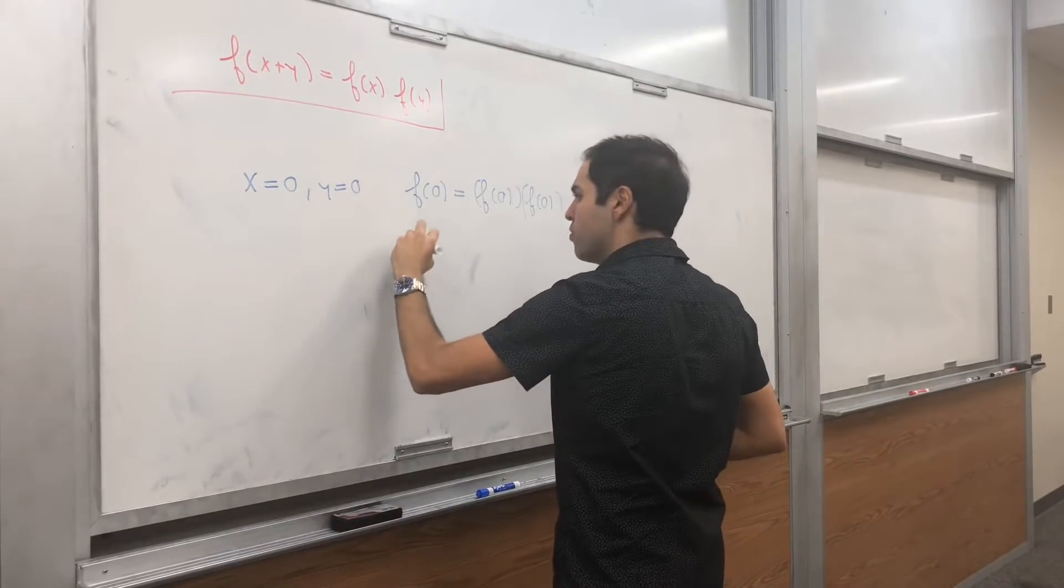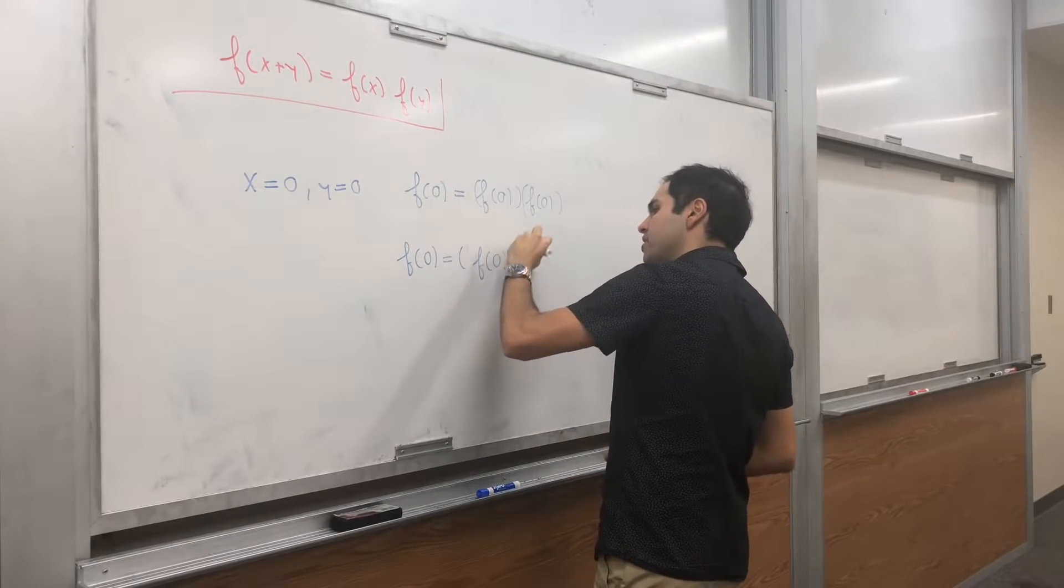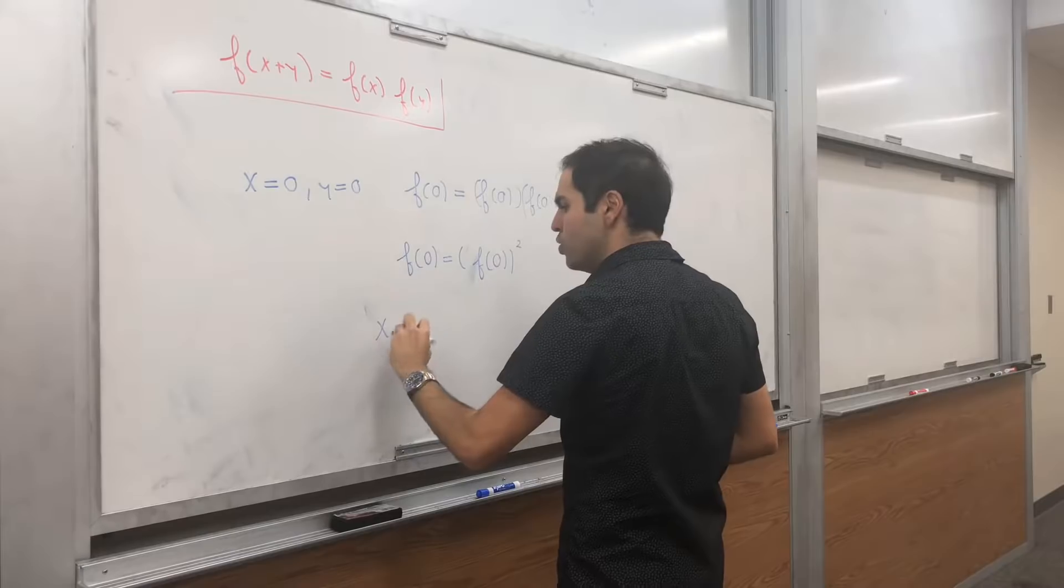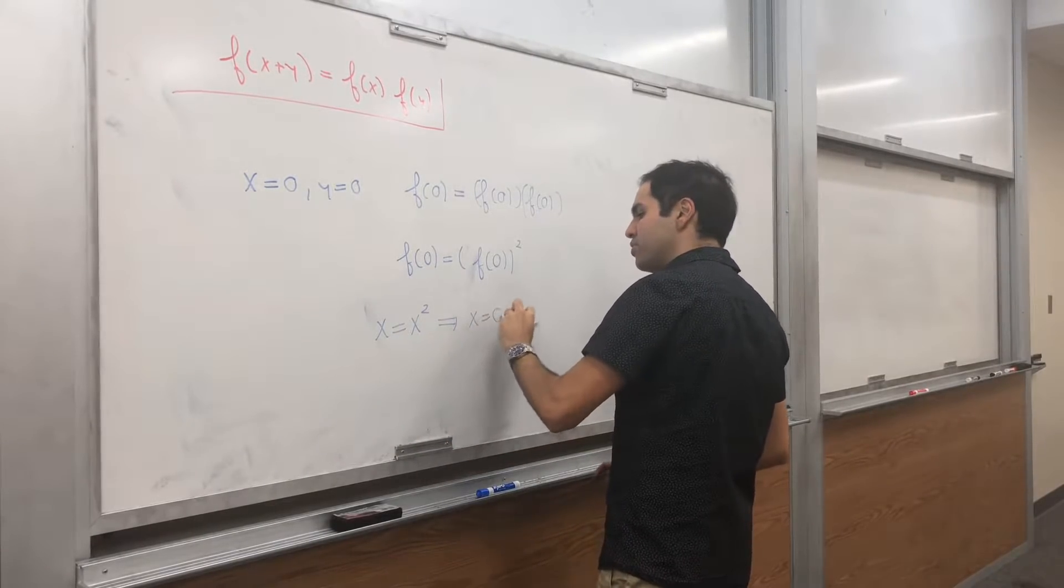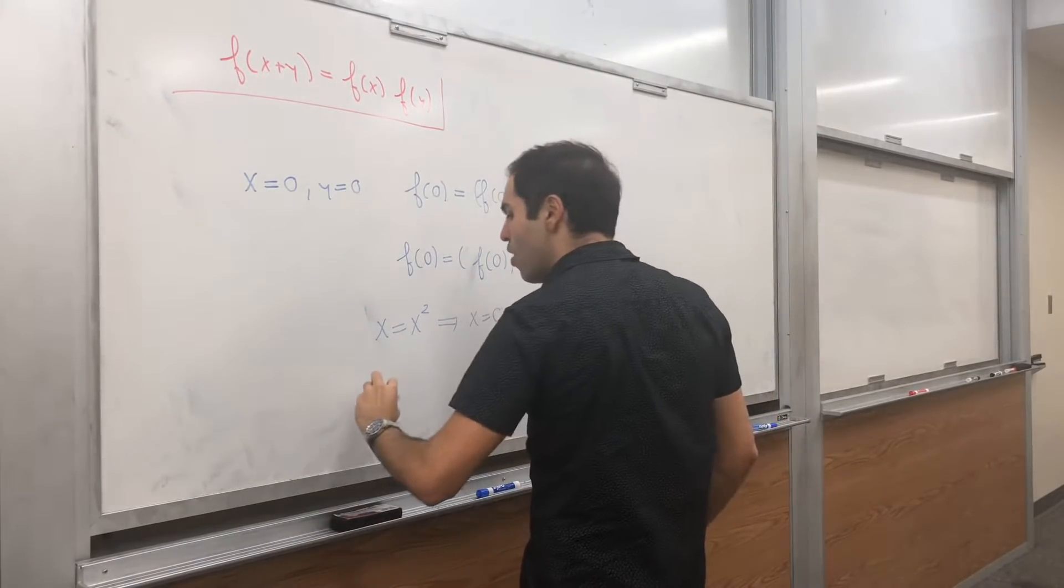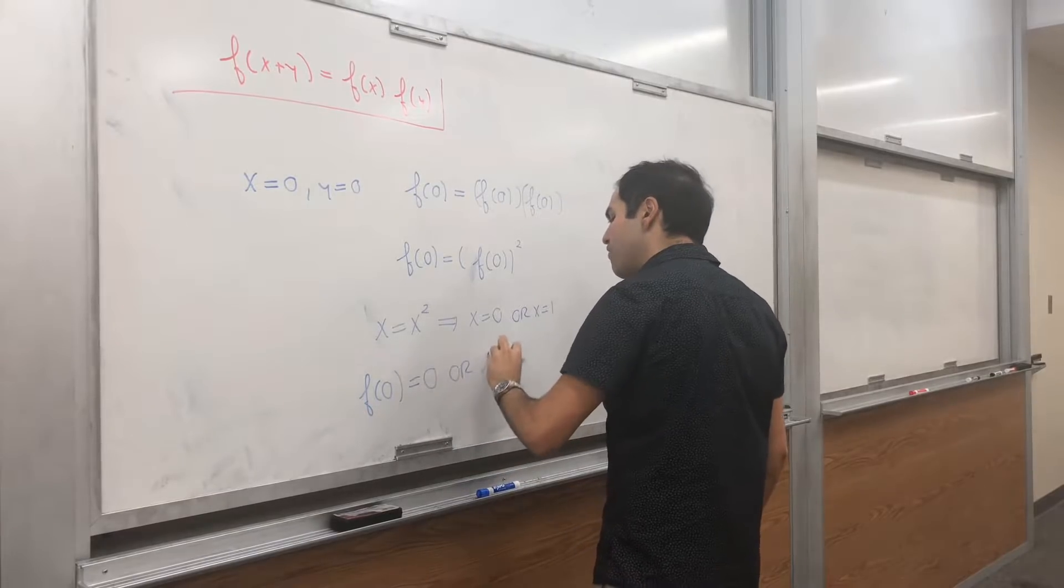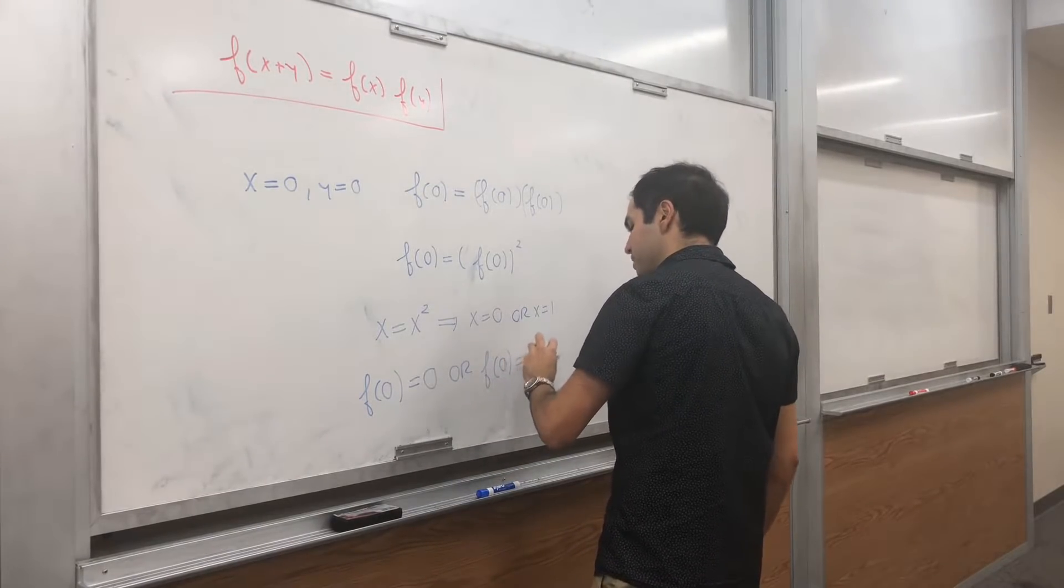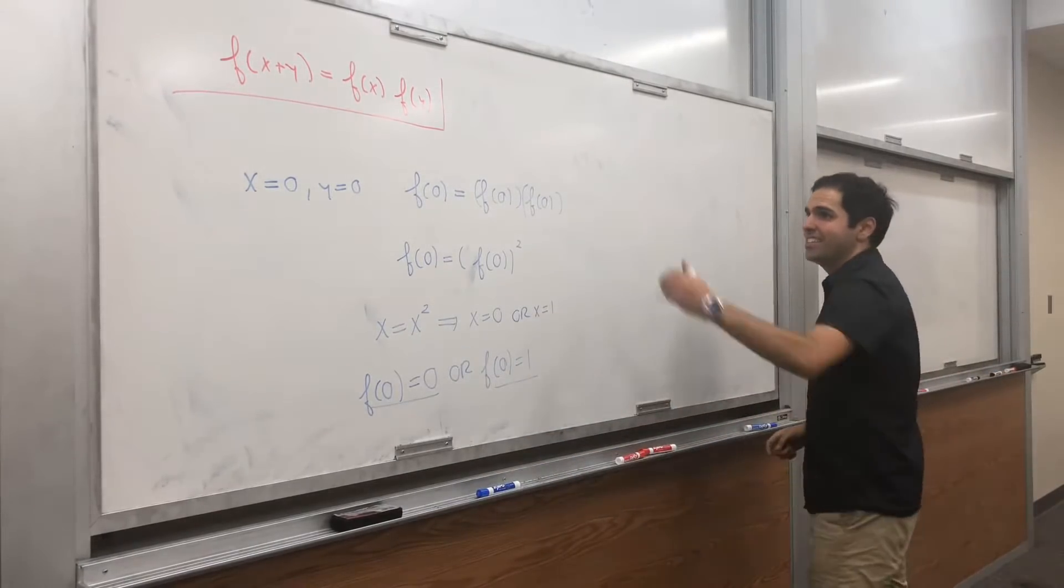So in other words f of 0 equals to f of 0 squared and the only solutions to x equals to x squared is simply x equals to 0 or x equals to 1. So first of all we just know that f of 0 equals to 0 or f of 0 equals to 1.